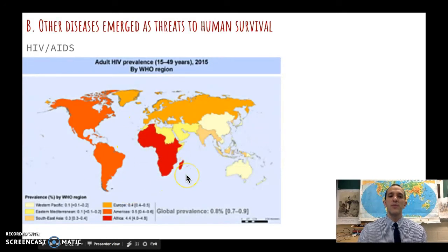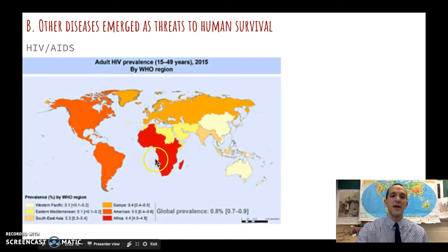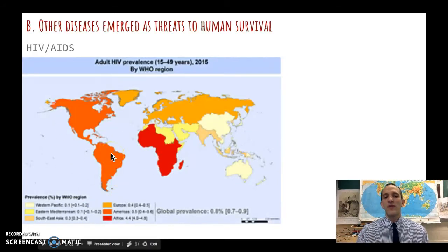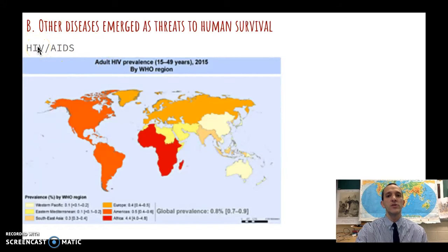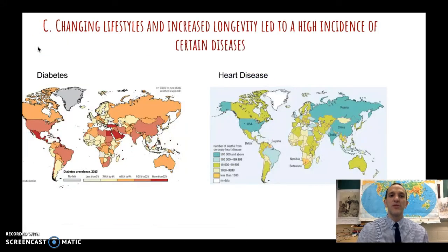Some new diseases have also emerged. HIV and AIDS are a significant issue — about 4.5% of people between 15 and 49 have HIV in sub-Saharan Africa, making it a big problem there. In the Americas it's about 0.5%, which is much less but still significant. This disease did not exist in the world before the late 1970s and early 1980s — it's a new disease that emerged as a threat to survival.